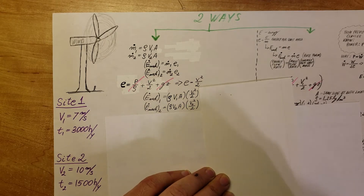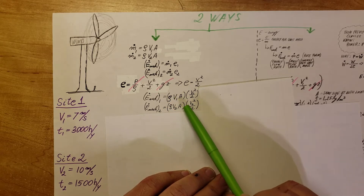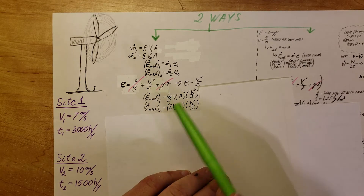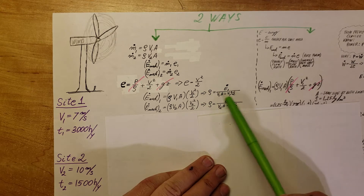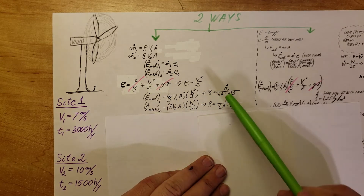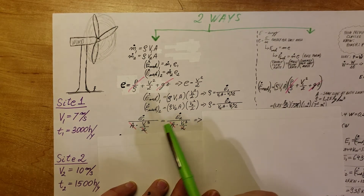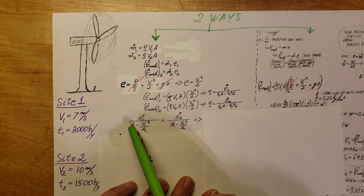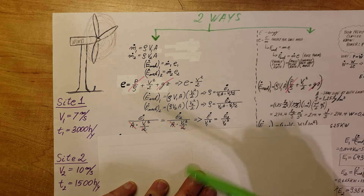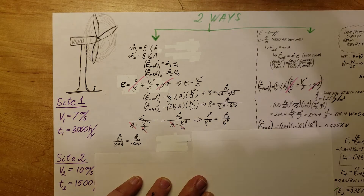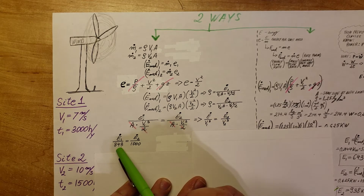The mechanical energy flow rate equations in rate form are now set up for both locations. We have two equations but don't know area A or density ρ. So we solve for ρ in both cases, then set the two expressions equal to each other. Area cancels because it's the same at both locations, and the factor of two cancels, leaving a simplified equation. We plug in the known velocities at location one and location two.